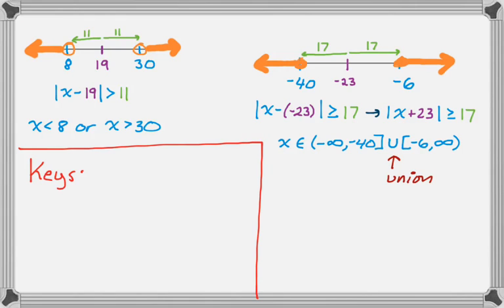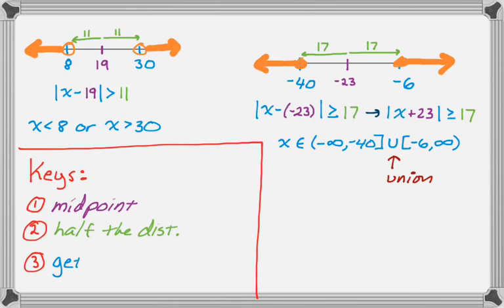So there's really only three things you need to keep in mind. One is you want to find the midpoint. Number two is you want to find half of the distance. And then number three is one of those really obvious things. You want to get the inequality right. So is it greater than? Is it less than? Is it equal to at all? And that's about it. So I hope this was helpful and good luck.